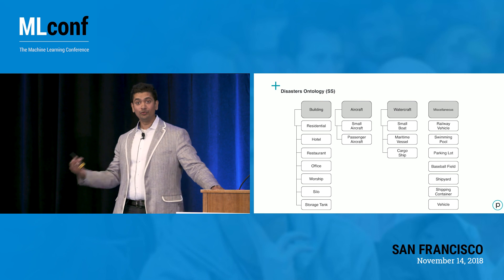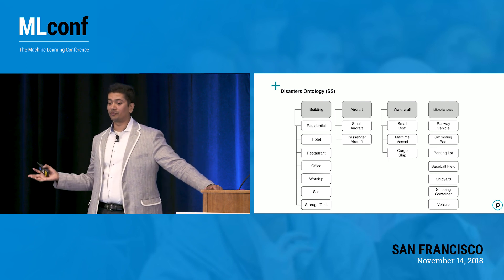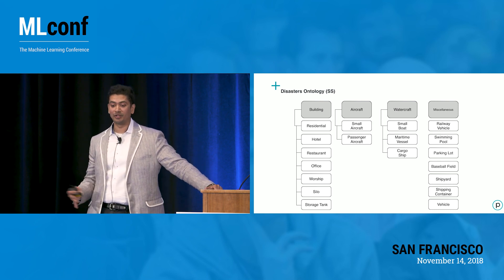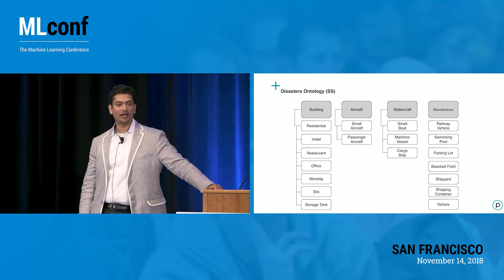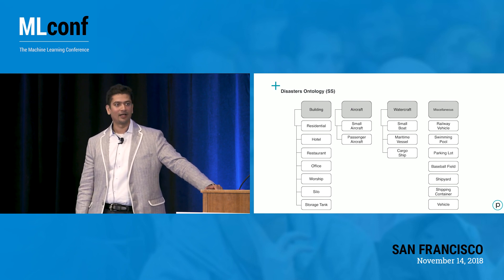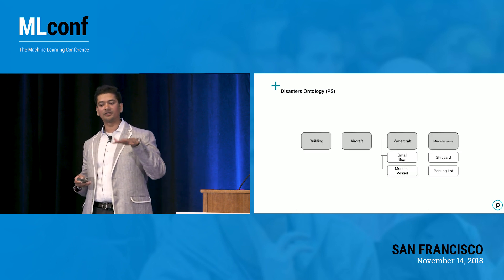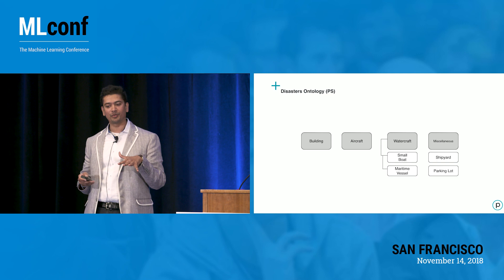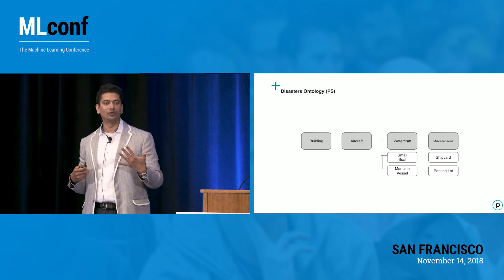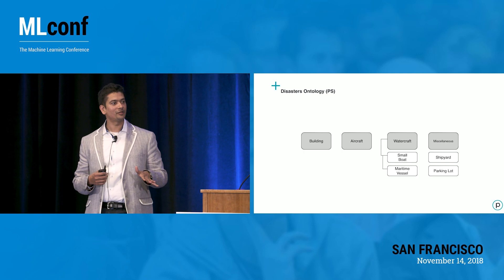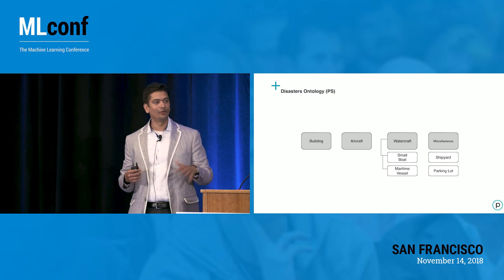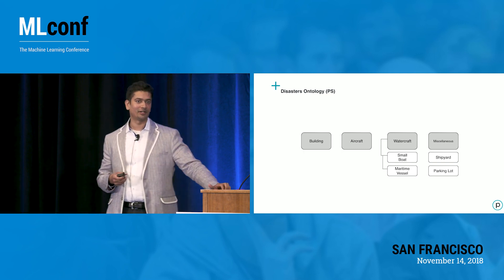Through repeating that process over a couple of weeks, we built out this ontology which has land use types like buildings, aircrafts, watercraft, and miscellaneous objects. This is the ontology on SkySat. You can build a similar ontology on our PlanetScope imagery, and together it gives you a catalogue of objects that are discernible and localizable within our imagery.